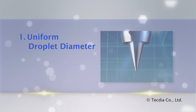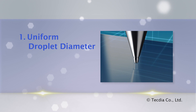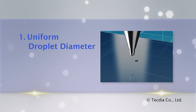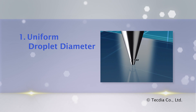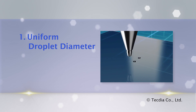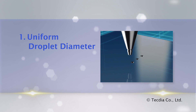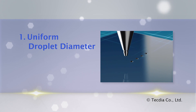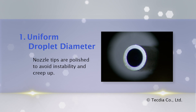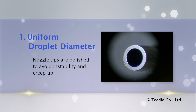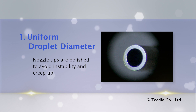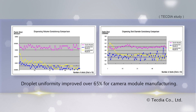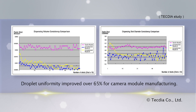Uniform Droplet Diameter: Uniformity of the droplet shape is necessary, especially in small material volumes. There may be adhesion problems if the shape is inconsistent from shot to shot. Tectia nozzle tips are polished to avoid instability and creep-up. This improved droplet uniformity by over 65% versus conventional tip designs.